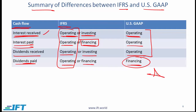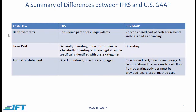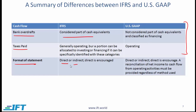The curriculum provides additional detail on other cash flow elements such as bank overdrafts and taxes paid, and also discusses the format of the cash flow statement — you can simply read these, as they are not overly testable, but it would not hurt to review them. From a format perspective, IFRS allows both direct and indirect methods, but direct is encouraged. US GAAP also allows direct or indirect, and direct is again encouraged. A reconciliation of net income to cash flow from operating activities must be provided regardless of the method used.